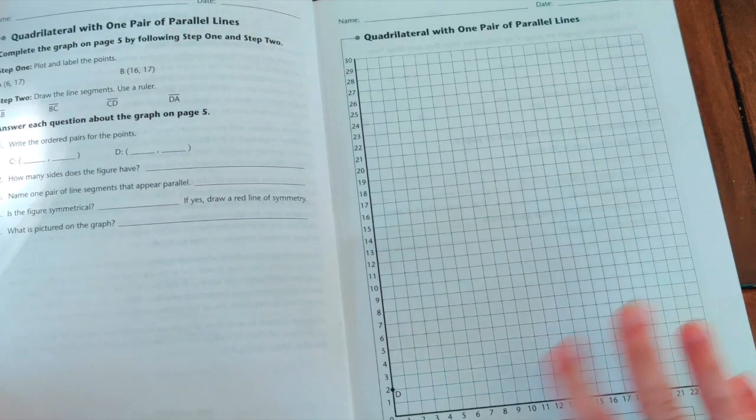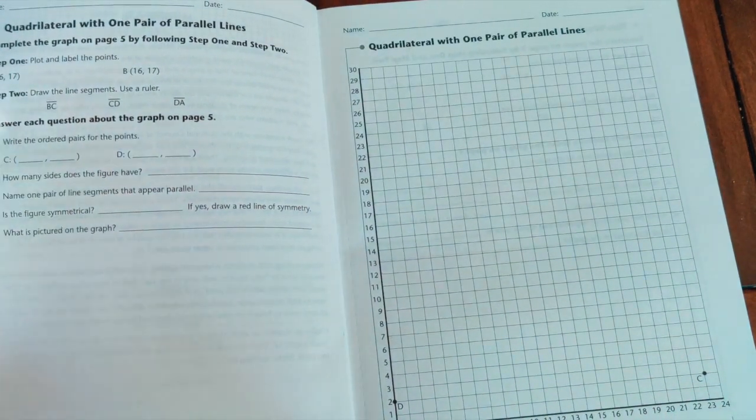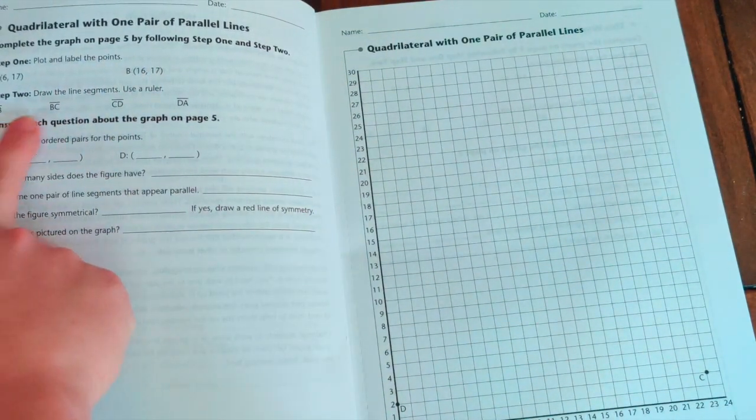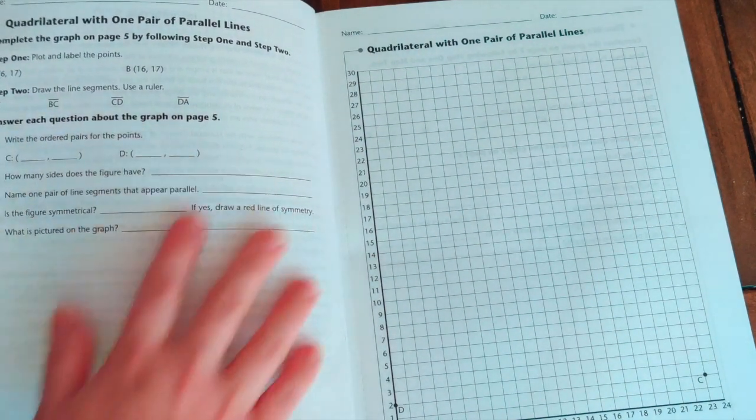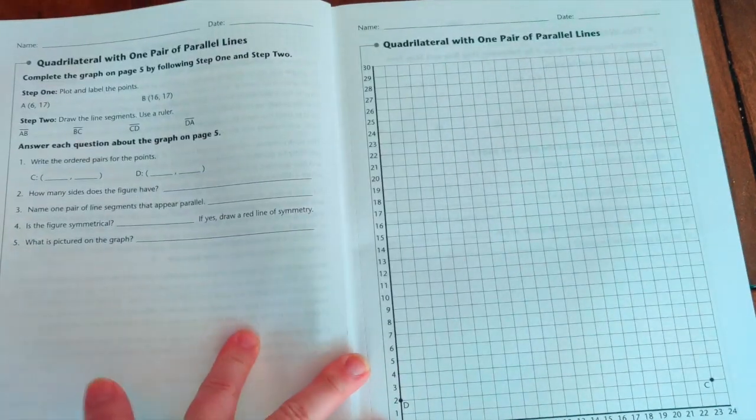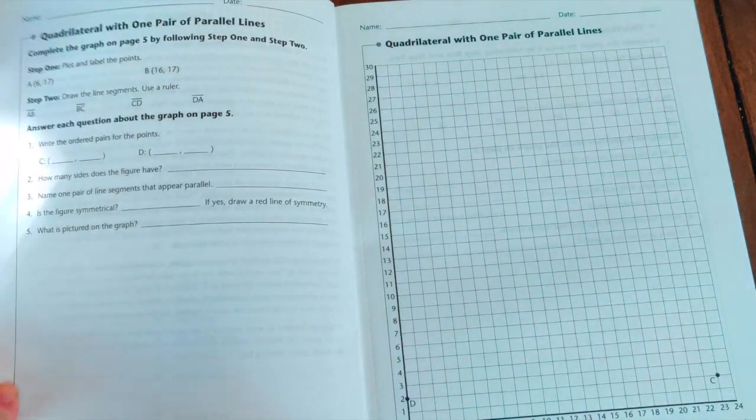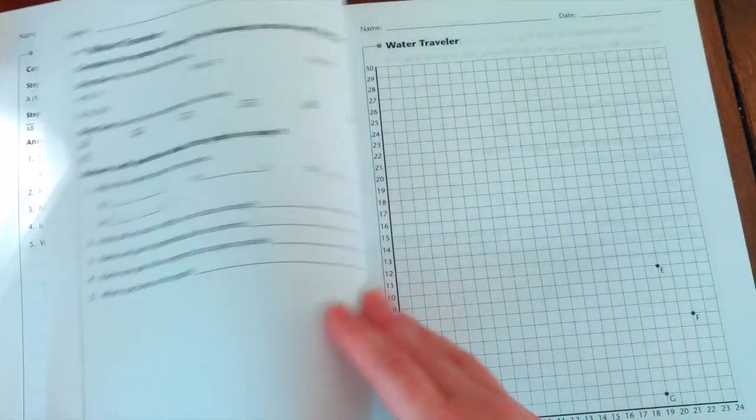Complete the graph on page five by following step one and step two. So basically, they're going to have you plot the different points, draw the different line segments and then answer the questions. It's really straightforward. Should be pretty simple, but as it goes through the book, it gets harder and harder.